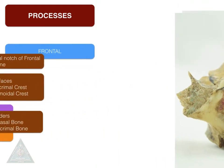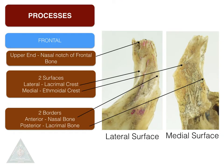Coming to the frontal process, it is present on the medial and superior part of the body of the maxilla. It extends up to articulate with the frontal bone. It has got an upper end which articulates the nasal notch of the frontal bone. It has got two surfaces: the lateral surface and the medial surface.